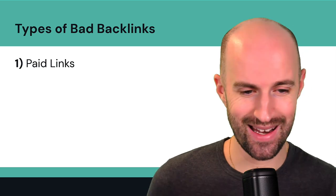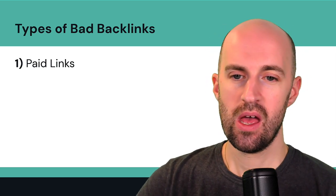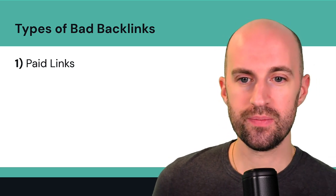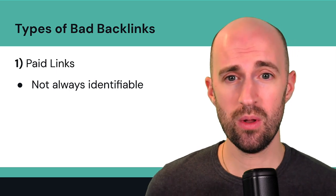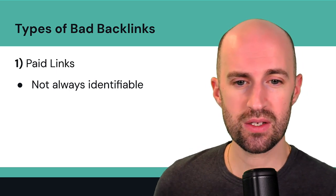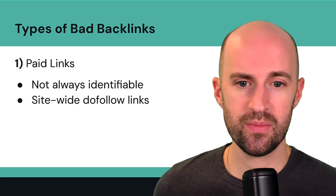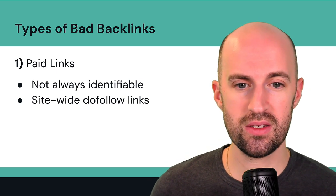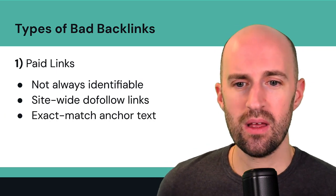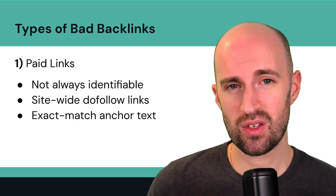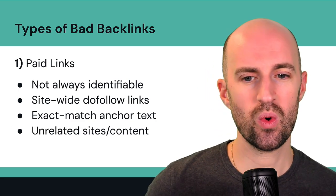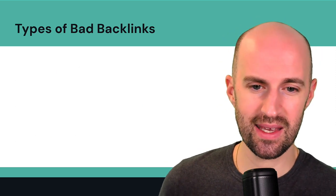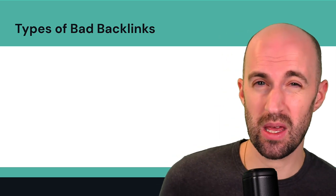First, paid links. Google hates paid links — it's just not a good thing and we don't want to acquire them at all. They're not always identifiable, but they can often be site-wide do-follow links, use exact match anchor text, or come from sites with unrelated content to the site being linked to. All of these are clues that it could be a paid link.